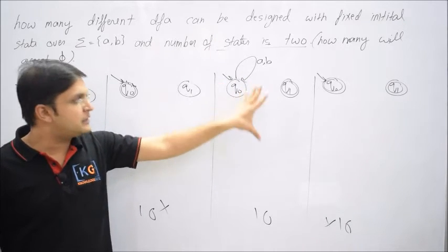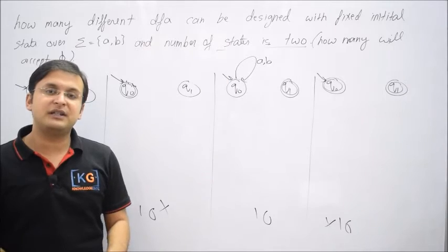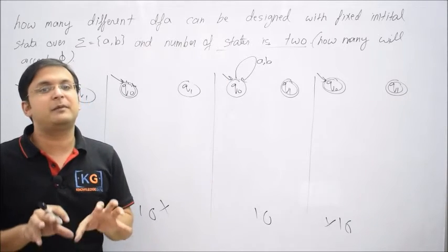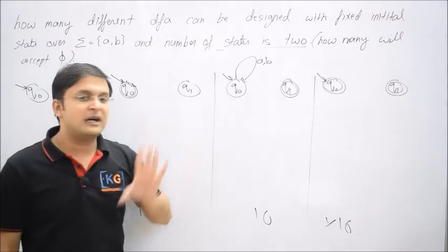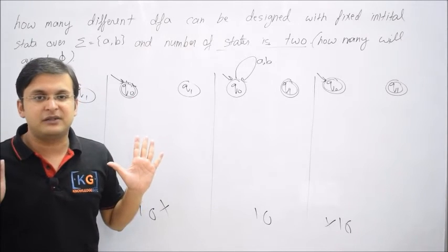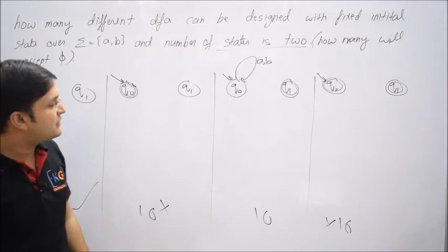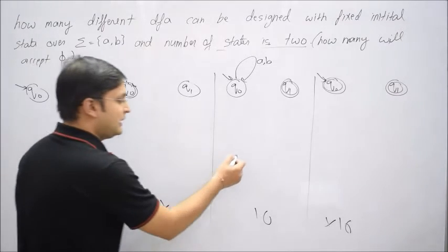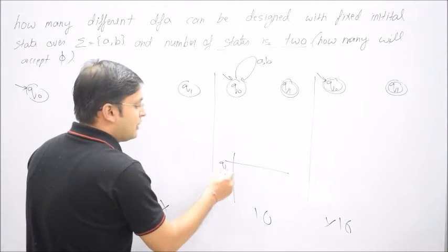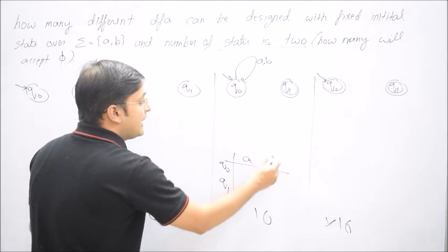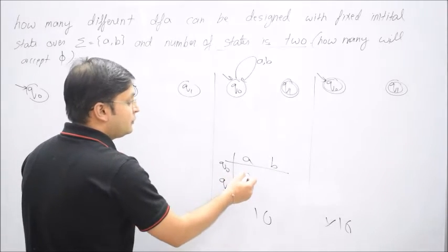If a state is unreachable, then like in the previous video I discussed, if a state is unreachable then irrespective of the fact that it is final or non-final, its presence and absence do not change the language accepting capability of the machine because unreachable is for sure a non-productive state, yes or no? Yes.